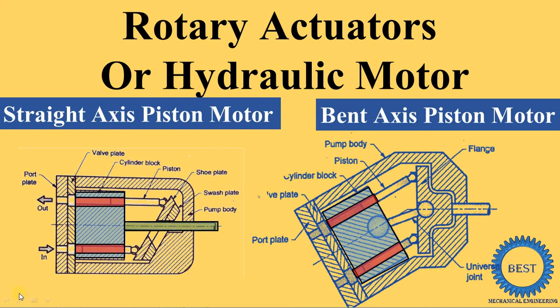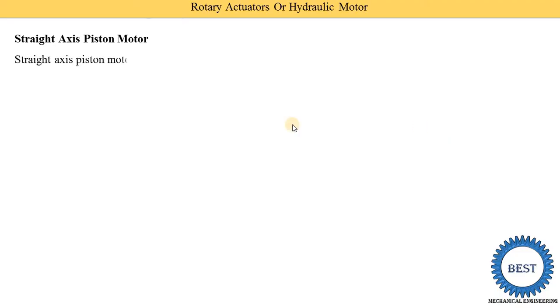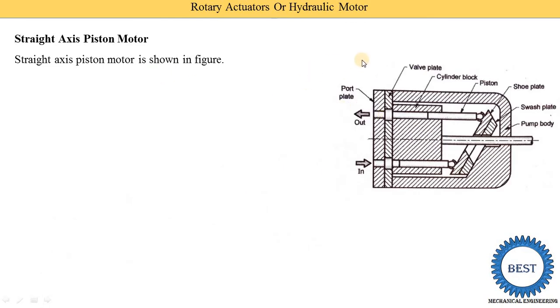In this video I explain two types of rotary actuators: hydraulic motors or pneumatic motors. The first one is the straight axis piston motor and the second one is the bent axis piston motor. First we understand the straight axis piston motor. The construction of the straight axis piston motor is the same as the straight axis piston pump.